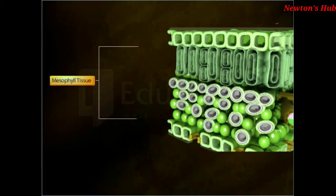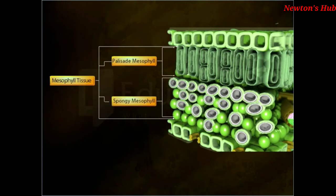The mesophyll tissue is an internal part of the leaf where the process of photosynthesis takes place. It consists of two layers: the palisade mesophyll, which is the upper layer, and the spongy mesophyll, which is the lower layer. Let's learn about palisade mesophyll first.